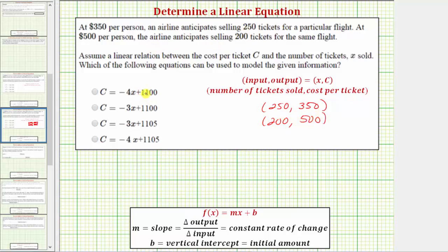From here, our linear function is going to be in the form of C equals MX plus B, where M equals the slope or the constant rate of change, which in this case would be the change in the cost per ticket divided by the change in the number of tickets sold. And B equals the vertical intercept, which is also the initial or starting amount.